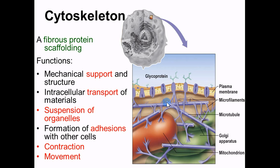The cytoskeleton also helps carry materials up and down — it's like a railroad. You can put a material somewhere and shuttle it across a long tubule. You can see in this picture how membrane-bound organelles like the mitochondria are secured in place rather than just floating around. The cytoskeleton can also come all the way up into the plasma membrane and tie down or secure it to other cells for adhesions.